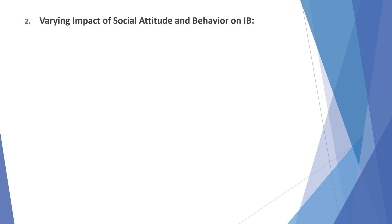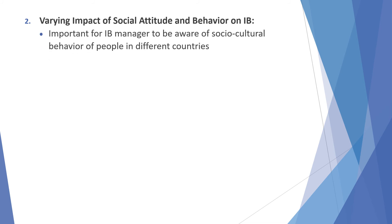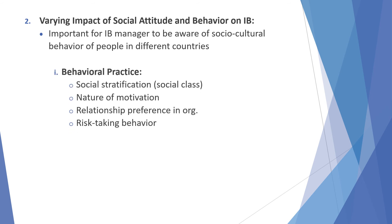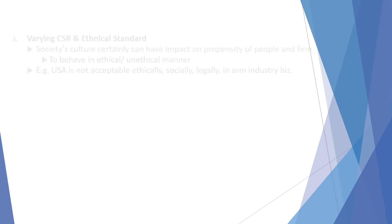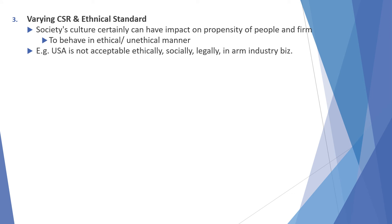Varying impact of social attitudes and behavior on international behavior: it is important for IB managers to be aware of the socio-cultural behavior of people in different countries. There is first behavioral practice, including social stratification, social class, nature of motivation, relationship preference in the organization, and risk-taking behavior. Next there are cultural practices like ethnicity differences, language as a stabilizer, and religion as a stabilizer. We also have varying CSR and ethical standards.